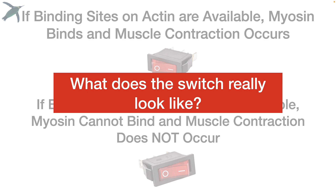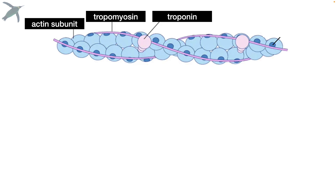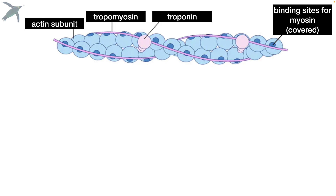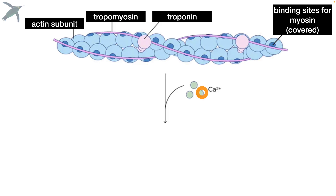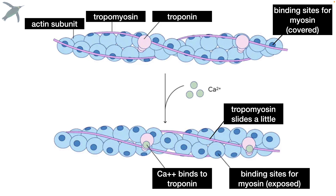Skeletal muscle contraction is all or none — the muscle cell either contracts fully or it doesn't. What does the switch really look like? That's where the other thin filament proteins come in. We've got the actin subunit, a long skinny protein called tropomyosin which covers the actin binding sites, and globular proteins spaced along the thin filament called troponin. Just remember: the small globular protein has the shorter name, troponin; the long skinny protein has the longer name, tropomyosin. The tropomyosin covers those myosin binding sites. What controls myosin's access to those binding sites? The answer is the ion calcium. When calcium is present, it binds to troponin and causes it to change shape. Troponin will then cause tropomyosin to slide off the binding sites and expose them to myosin.